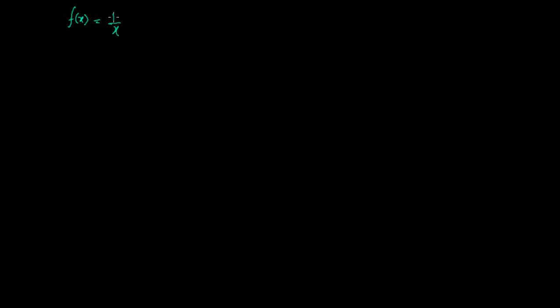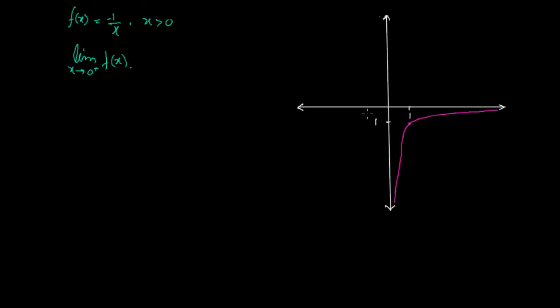As a second example, we shall consider f(x) = -1/x where x is greater than zero, and we shall examine the limit as x approaches zero from the positive side of f(x). If you look at the graph of this function, here is the x-axis and here is the y-axis.